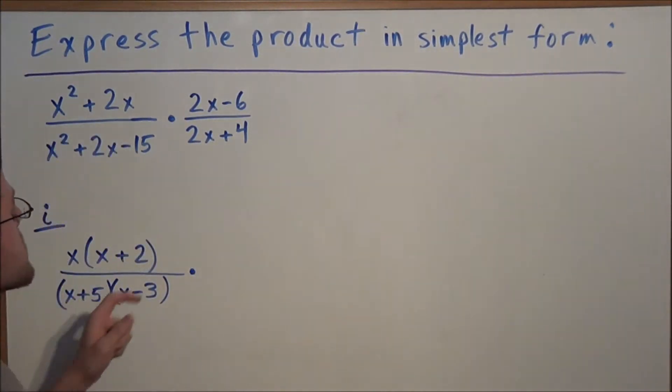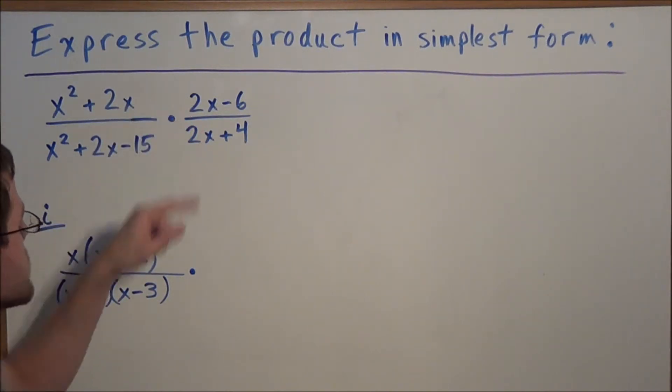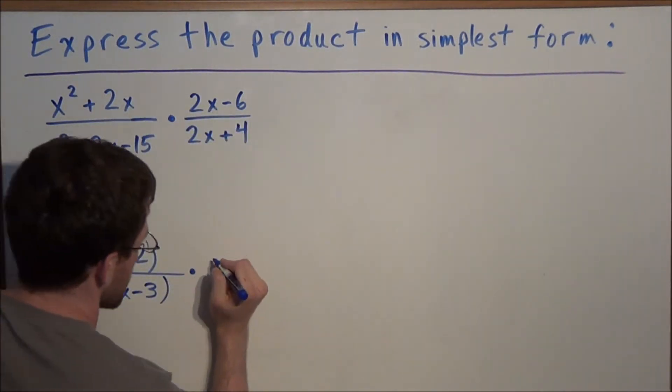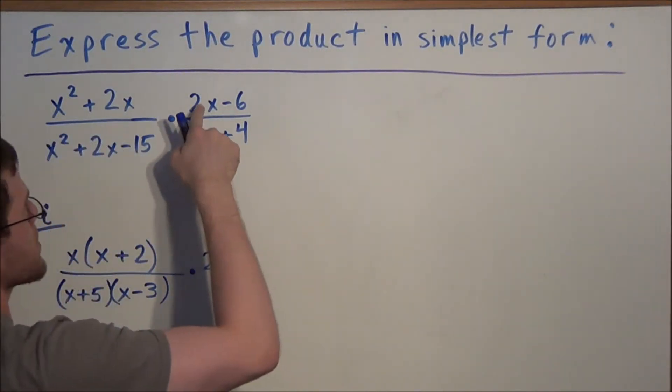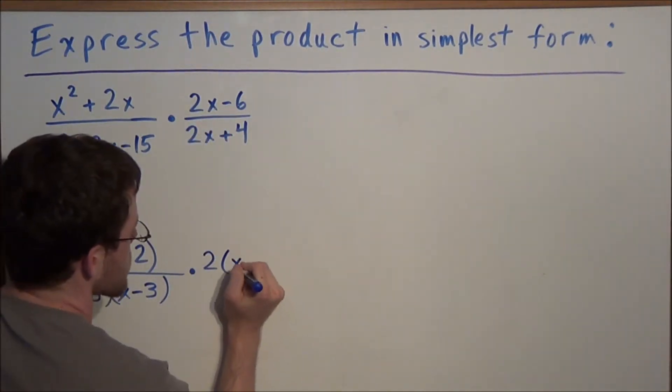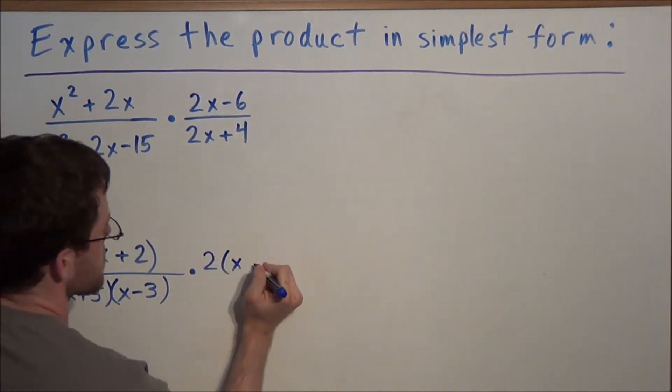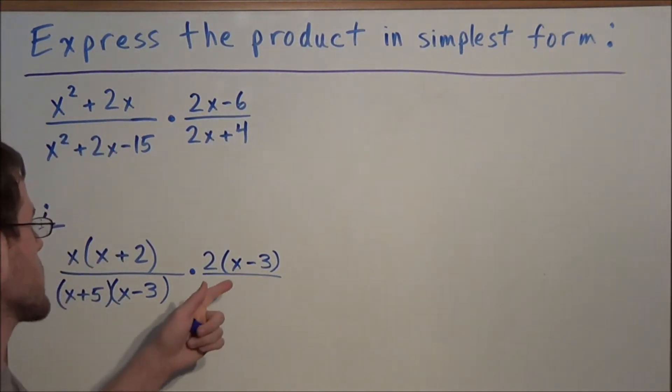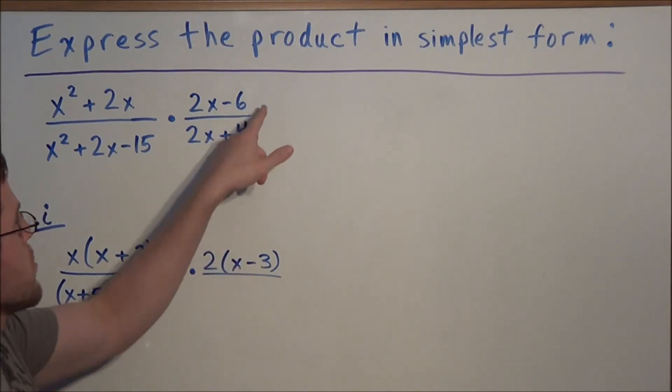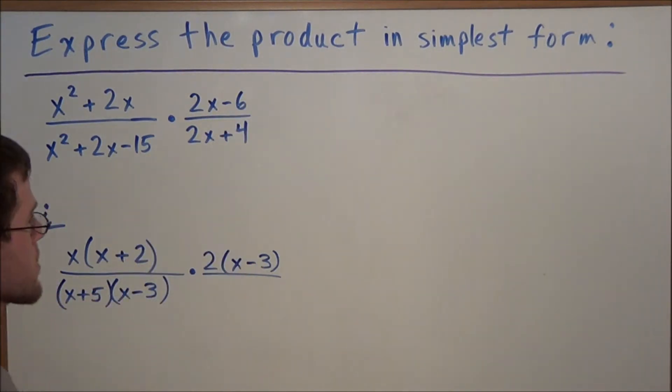And now times, and once again we have a greatest common factor between 2x and negative 6. They both have a common factor of 2. And if we divide the first term by 2 we have x. If we divide negative 6 by 2 we have negative 3. Once again we're not going to go through the process but if you redistribute the 2 you'll wind right back at 2x minus 6.